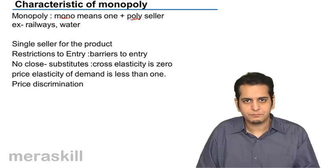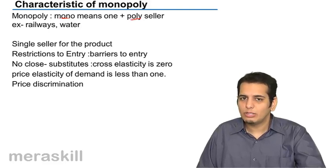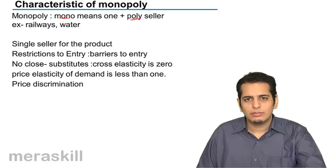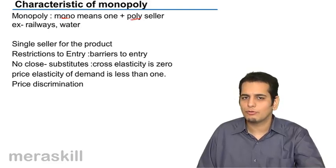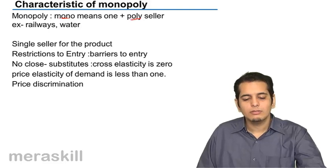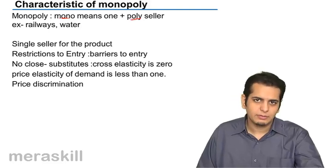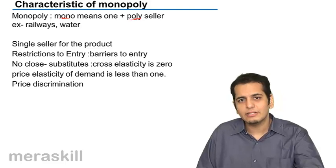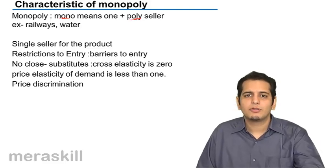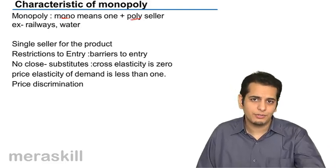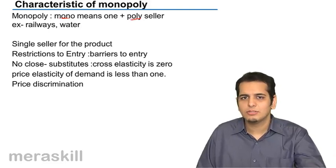There's only one seller in the market. We don't get many examples wherein you have only one seller in the market, but the example of railways is the best example we can consider for monopoly. It's a market wherein only a single player is allowed to operate. He is the only seller in the market — not necessarily with homogeneous goods; he might have many products, but the condition is he is a single seller. So a market where there's only one seller becomes a monopoly.